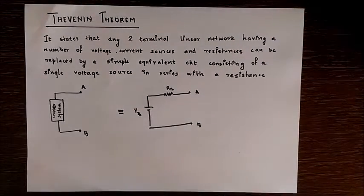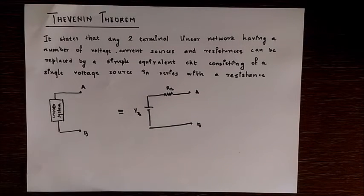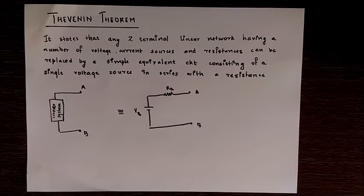Let's first understand the definition of Thevenin's theorem. It states that any two-terminal linear network having a number of voltage, current sources and resistance can be replaced by a simple equivalent circuit consisting of a voltage source in series with a resistance.